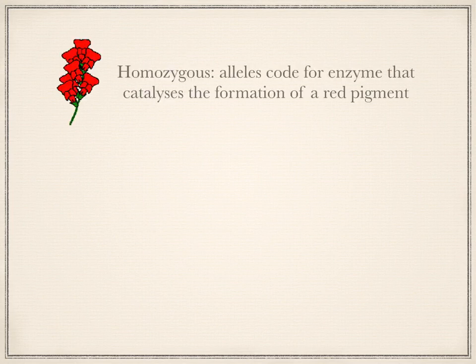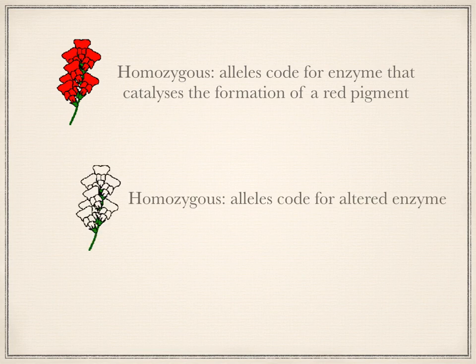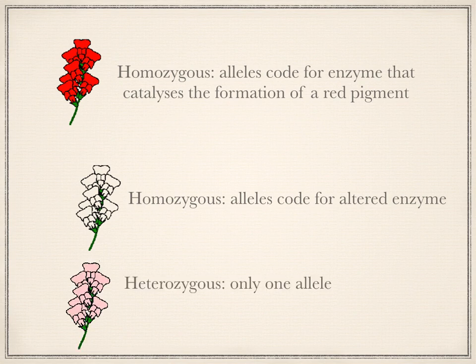In a Snapdragon, there is an allele that codes for the enzyme that catalyzes the formation of a red pigment. There is another allele that codes for an altered enzyme that lacks its catalytic activity and doesn't produce the pigment. In plants where no pigment is made, the plant is homozygous and the flowers are white. A heterozygous plant has only a single allele for the functional enzyme, so it produces sufficient pigment to make the flower look pink.